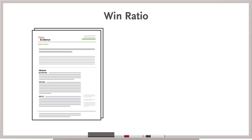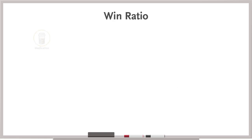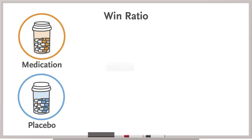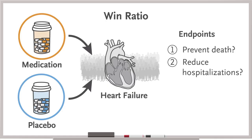In a randomized controlled trial, the win-ratio method analyzes a composite hierarchy of outcomes. Say you're conducting an RCT of a new medication versus placebo for patients with heart failure. You're interested in several endpoints in the following order: first, does the new medication prevent death? Second, does it reduce hospitalizations for heart failure? And third, does it improve patients' quality of life? A win-ratio analysis allows you to predetermine that hierarchy among the components of the composite primary outcome.